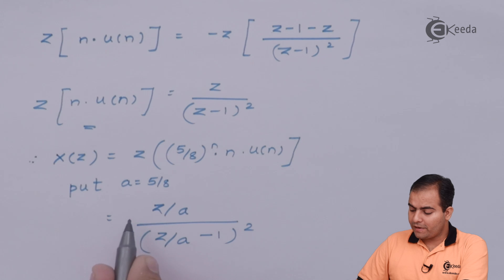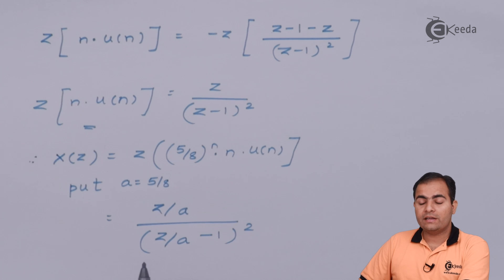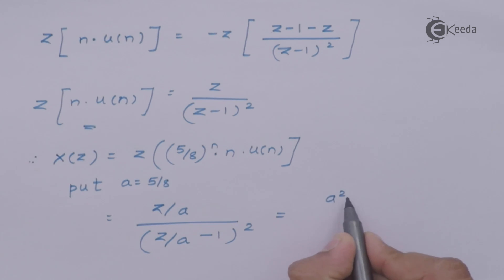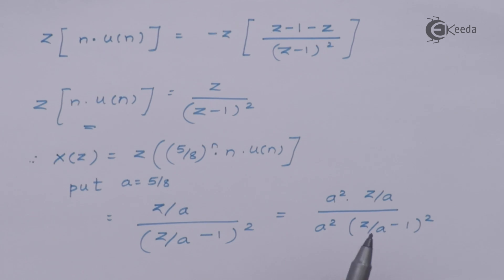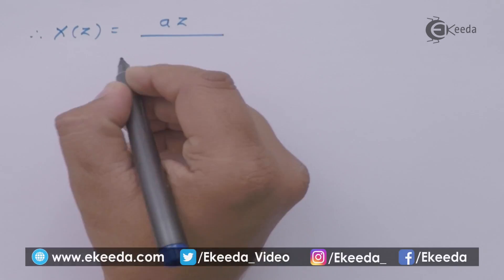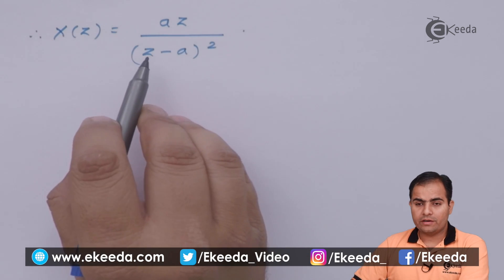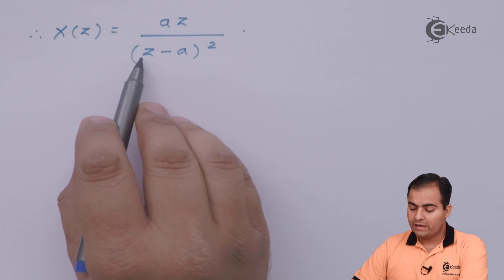Now simply multiply numerator and denominator by a squared. The reason is that the highest power of a in the denominator is a squared. When the a squared term enters the bracket, we multiply a inside, so a squared and a cancel, leaving only az in the numerator. Multiplying z/a by a cancels a, giving z, and 1 times a gives a in the denominator.